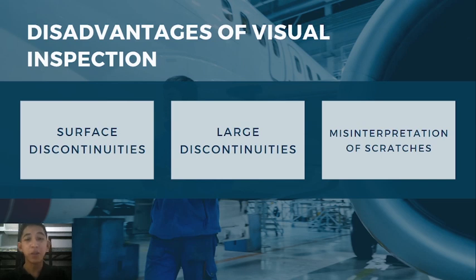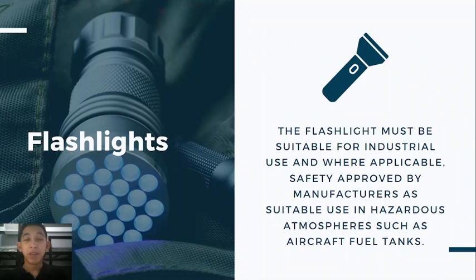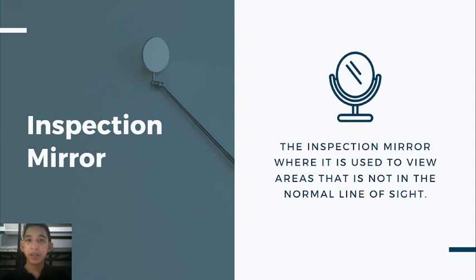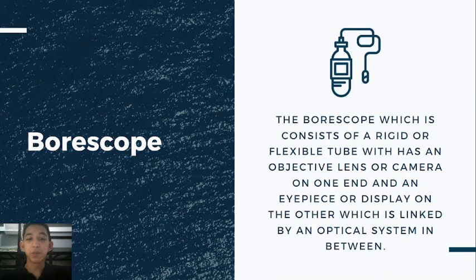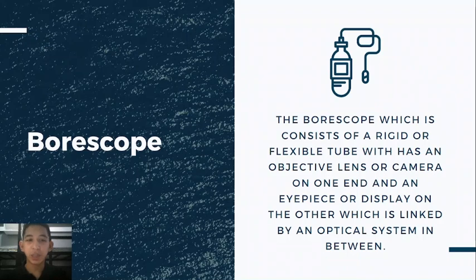Now let's go to the appropriate tools used in visual inspection. First is the flashlight. The flashlight must be suitable for industrial use and, where applicable, safety-approved by manufacturers as suitable for use in hazardous atmospheres such as aircraft hangars. Second is the inspection mirror, used to view areas not in the normal line of sight. Third is the simple magnifier, which is basically a single converging lens to magnify whatever is being inspected. Last is the borescope, which consists of a rigid or flexible tube with an objective lens or camera on one end and an eyepiece or display on the other, linked by an optical system in between. Borescopes are widely used in aircraft and engine maintenance programs to reduce cost. Fun fact — aircraft turbines have access ports specifically designed for borescopes.